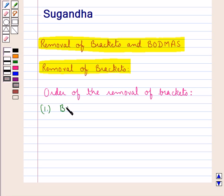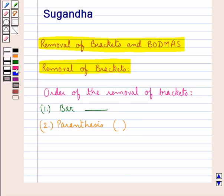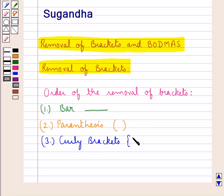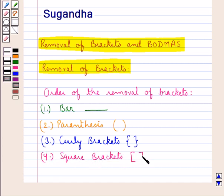First we remove the bar, which is of this kind. Then next we remove the parentheses, which are of this kind. Then next we remove the curly brackets — these brackets — and next we remove the square brackets. These are the square brackets.